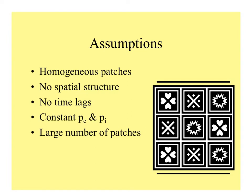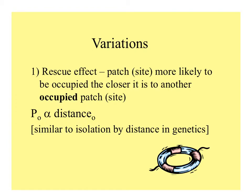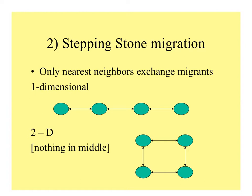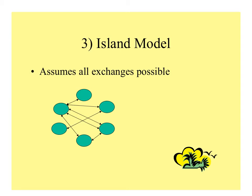This model assumes that all the patches are the same — there's no spatial structure, no time lags, constant probability of extinction and immigration, and also a large number of patches. Variations can involve the rescue effect, with sites more likely to be occupied if they're closer to other occupied sites. Some models assume only nearest neighbors exchange migrants in a one-dimensional array, or just adjacent patches in two dimensions. Then there's the island model, which assumes all exchanges are possible between any islands.